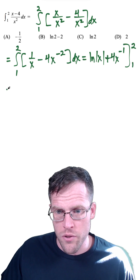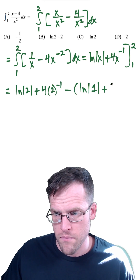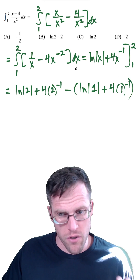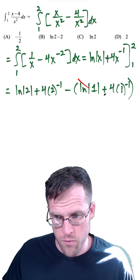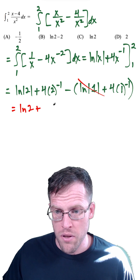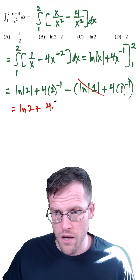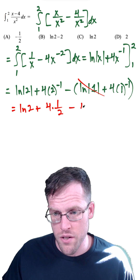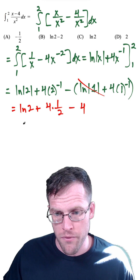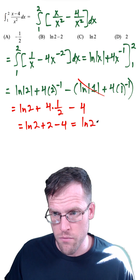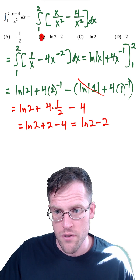So now all we have to do is just plug in and subtract. One tip here: make sure you put parentheses around the second part so you don't miss any sign changes. Natural log of 1 cancels out, and we're going to have natural log of 2 plus 4 times 2 to the negative 1, which is one half, and then minus 4 times 1. This simplifies to natural log 2 plus 2 minus 4, which gives us natural log 2 minus 2. Choice B is our answer.